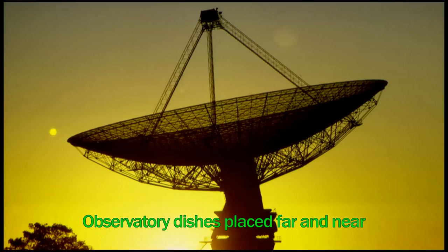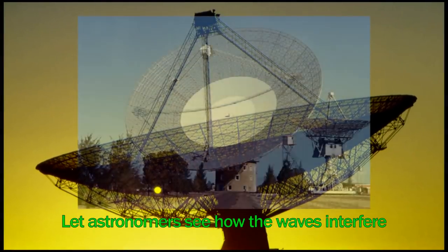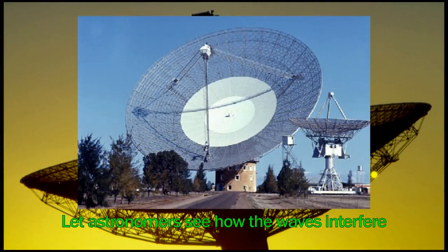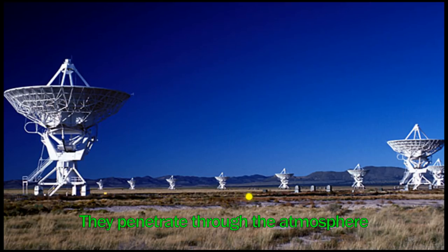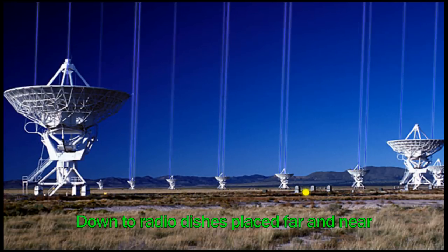Observatory dishes may fall and near. Let it's not a machine, how do waves interfere. We penetrate through the atmosphere down to radio dishes placed far and near.